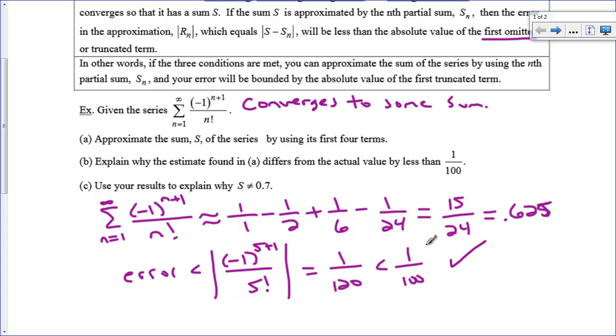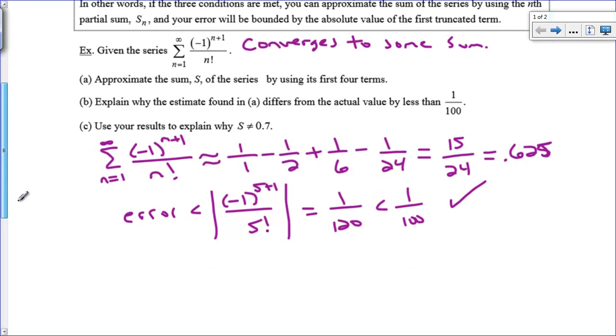And one over one hundred and twenty is less than one over one hundred because the denominator is bigger. A bigger denominator makes a smaller number. So I'm showing that there. I'm showing exactly what you asked me to check. I plugged in the first omitted term. I got a number smaller than the error. So we know that this answer is actually only a maximum value of one over one hundred and twenty off from the actual answer.